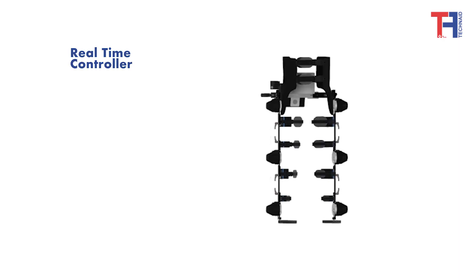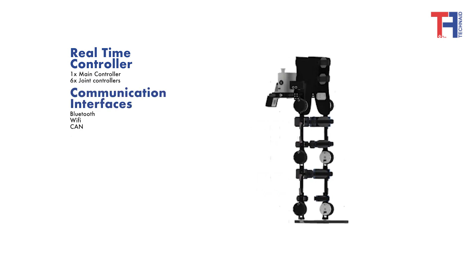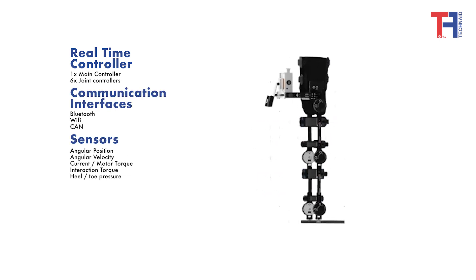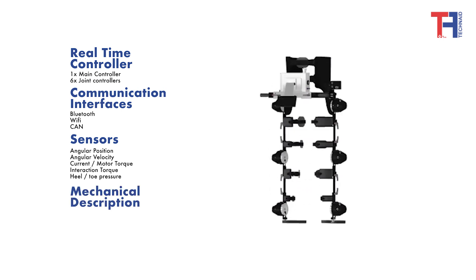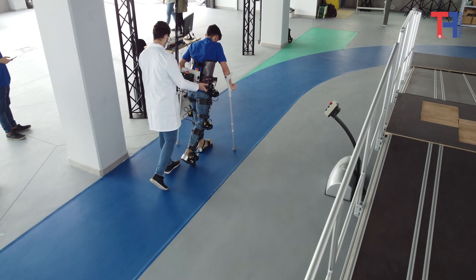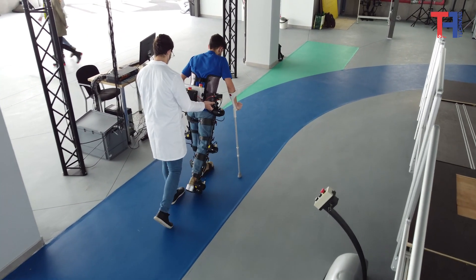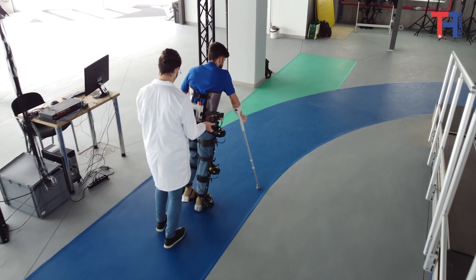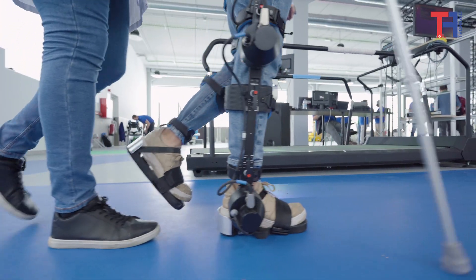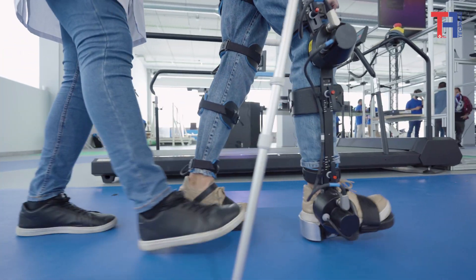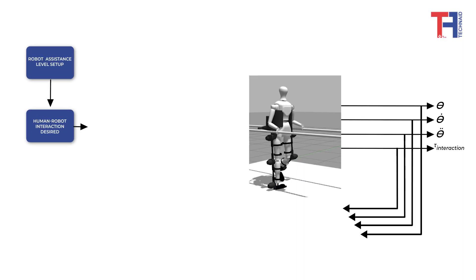It has six lower limb joints actuated in the sagittal plane. It also features several sensors that allow real-time measurement of data, such as the interaction of the device with the human, the speed and exact position of each movement, and the moment of pressure on the ground during the step. With the feedback of this data, the exoskeleton can modify the movement assistance and adapt it according to the wearer's needs.